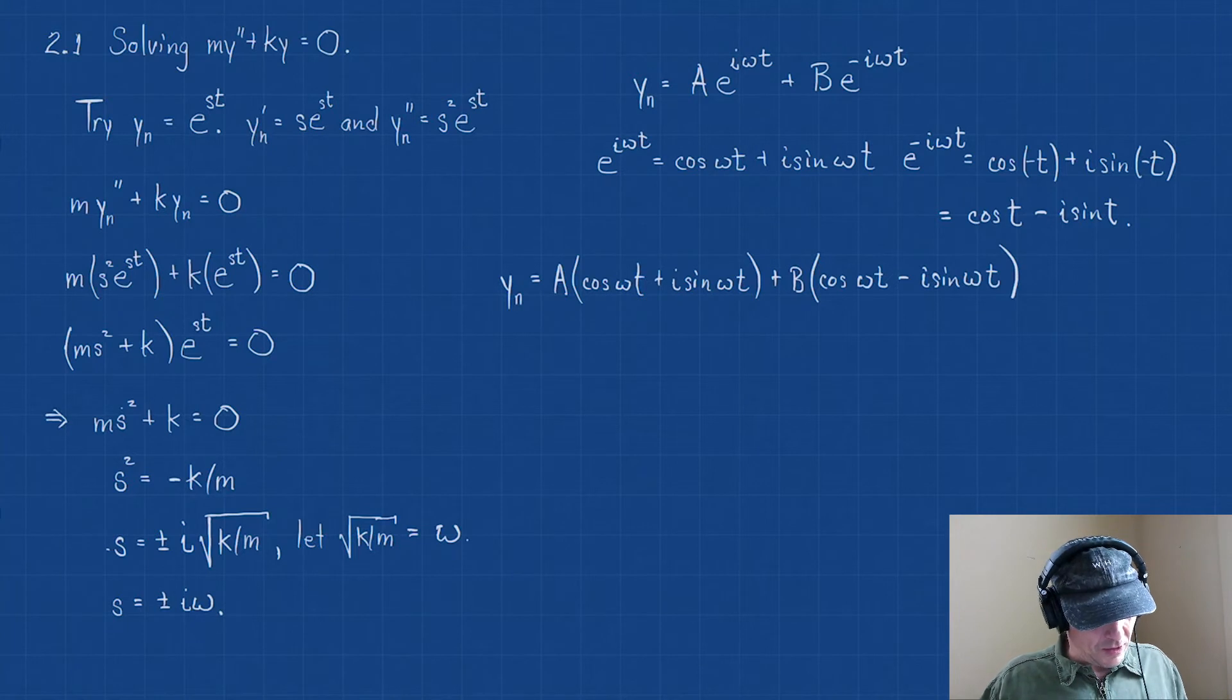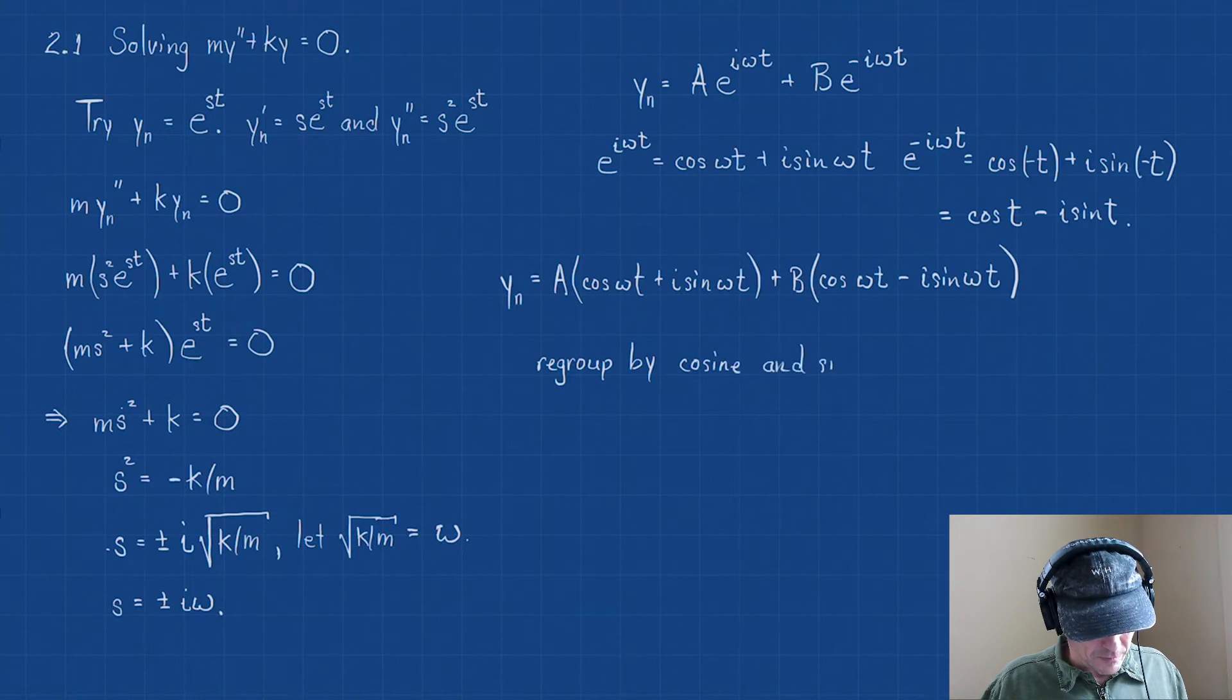Let's make our substitutions now. So now I can rewrite this as y_n = A[cos(ωt) + i·sin(ωt)] + B[cos(ωt) - i·sin(ωt)].